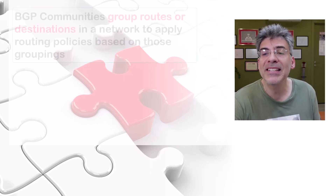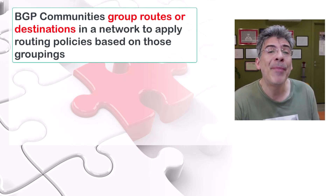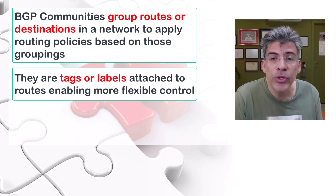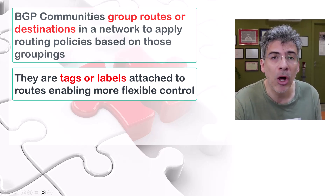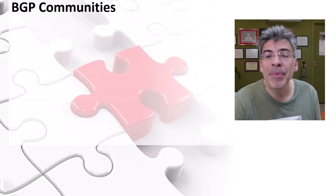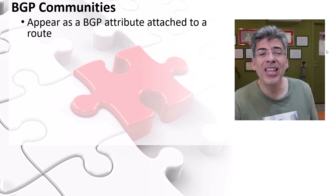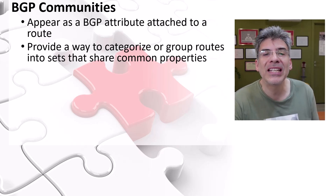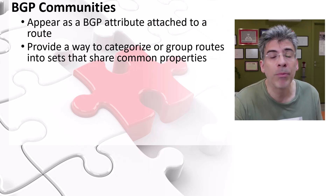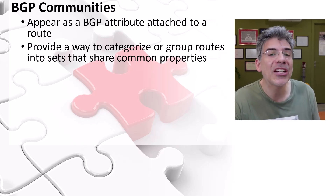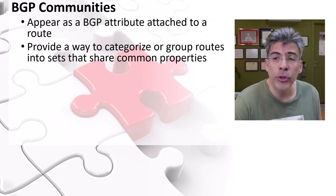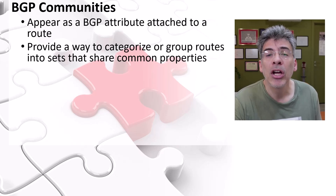BGP communities are a feature of BGP that provides a way to group destinations in a network and to apply routing decisions based on those groupings. They're essentially tags or labels that can be attached to routes, enabling more flexible and granular control over routing policies. These communities appear within BGP updates as attributes. They're called communities because they represent a way to categorize or group routes into sets that share common properties or behaviors — a collection or group enabling the grouping of routes based on shared characteristics for applying common policies.